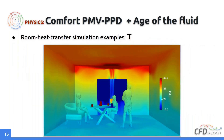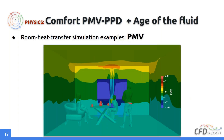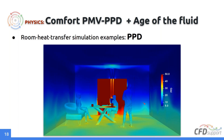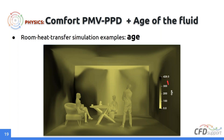Here are some results from the new room heat transfer tutorial showing temperature distribution, PMV distribution — with values between minus one and zero, which is a good comfortable range — and PPD dissatisfaction, which is also quite low for all three people inside. The age of air is also shown. In this steady-state simulation the age values are connected to the number of iterations: fresh air is near the inlet, while air is older in the corner of the room.